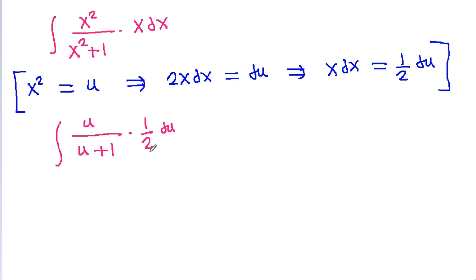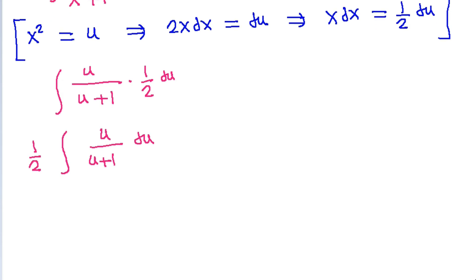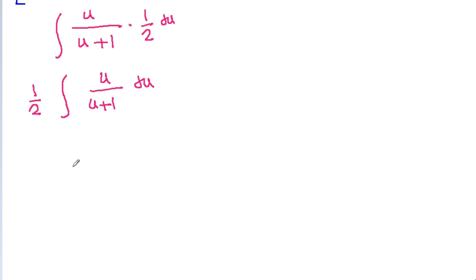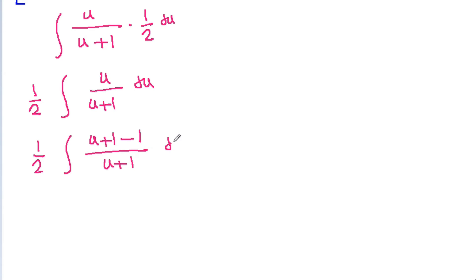Since 1 by 2 is a constant, we can take it out of the integral. So it is 1 by 2 times the integral of u by u plus 1 du. And we rewrite u as u plus 1 minus 1, so it becomes 1 by 2 times the integral of u plus 1 minus 1, divided by u plus 1 du.